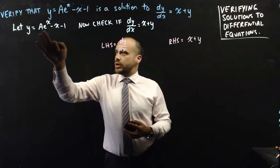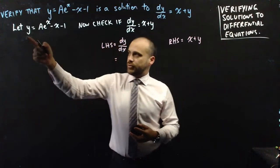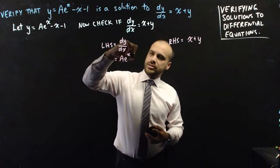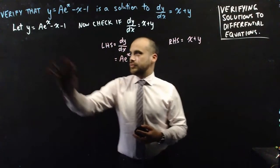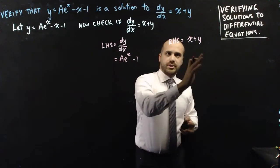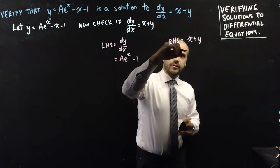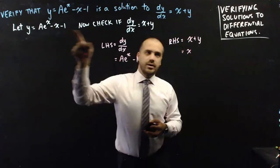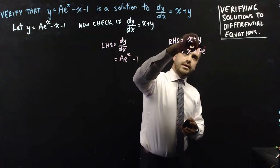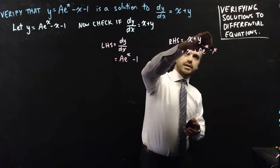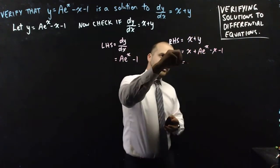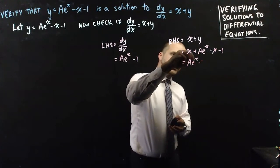If y is equal to ae to the x minus x minus 1, then the derivative of y with respect to x is equal to ae to the x minus 1. That's just the derivative of that. Now, if the right-hand side is equal to x plus y, and we're letting y equal that, we can say that x plus y equals x plus ae to the x minus x minus 1. The x terms cancel each other out, giving ae to the x minus 1.